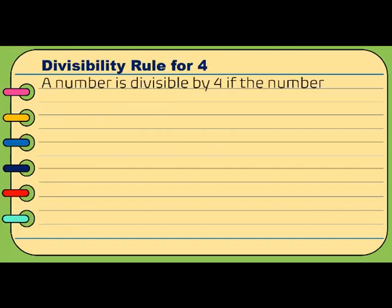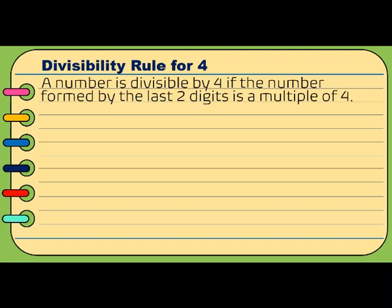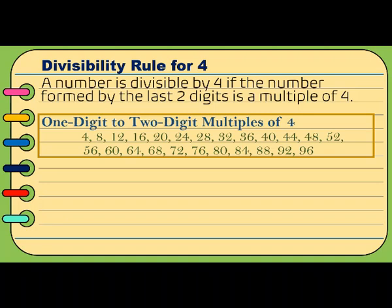A number is divisible by 4 if the number formed by the last two digits is a multiple of 4. Let us know first the multiples of 4: 4, 8, 12, 16, 20, 24, 28, 32, 36, 40, 44, 48, 52, 56, 60, 64, 68, 72, 76, 80, 84, 88, 92, 96, and many more. But we only need 1 to 2-digit multiples of 4.